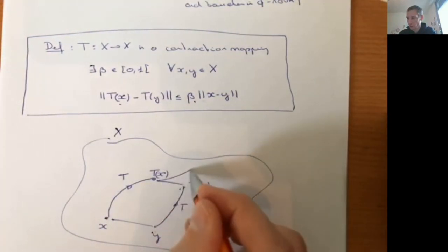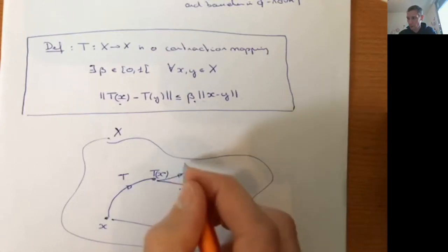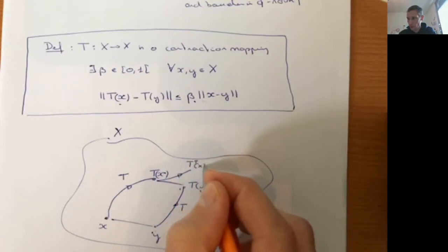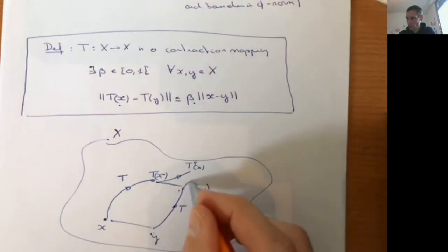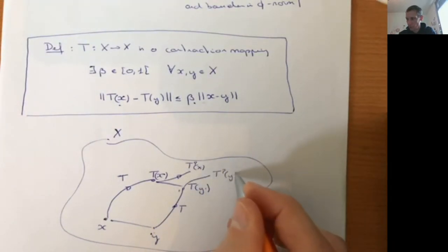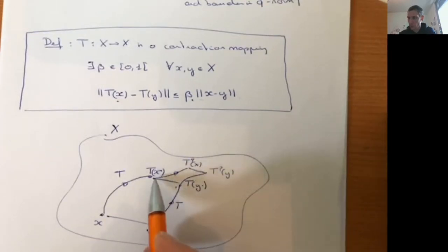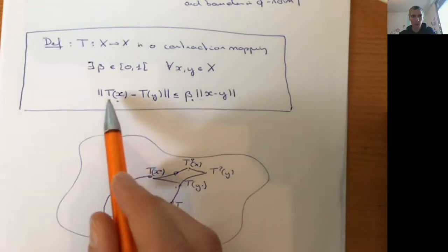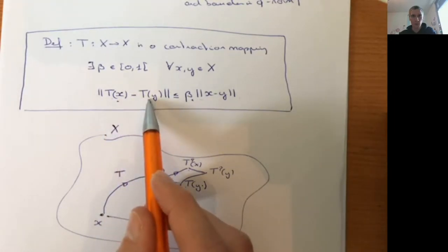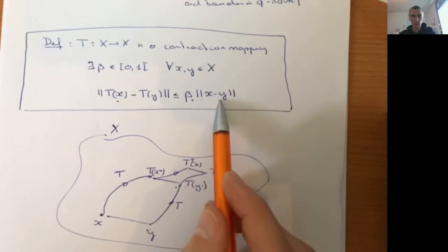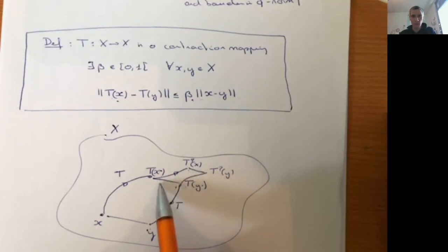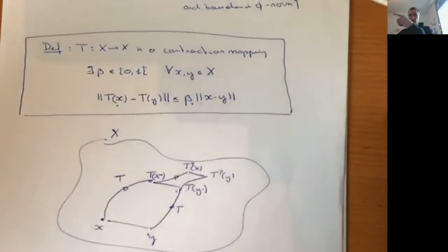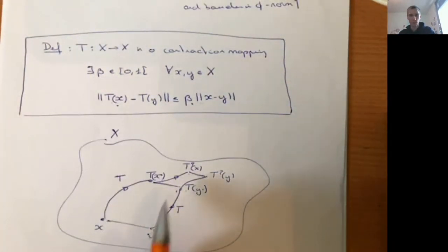You can also look at T²x and T²y. Their distance must be smaller than the distance between Tx and Ty, which in turn is smaller than the distance between x and y. The more you iterate this process, the closer these two vectors get. This is the core idea behind the contraction mapping.